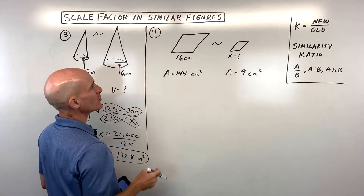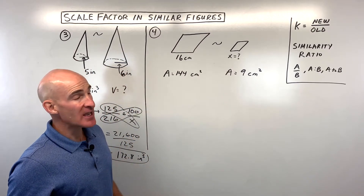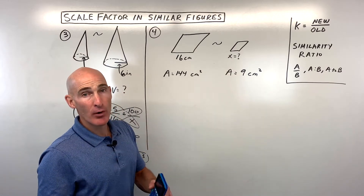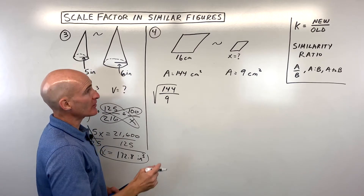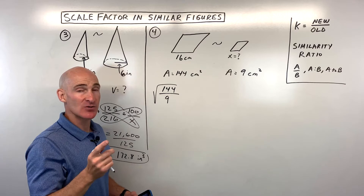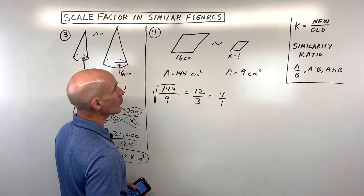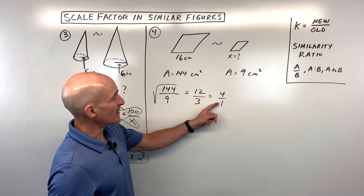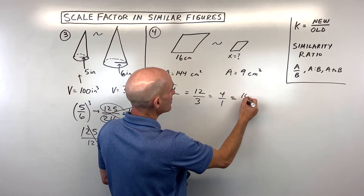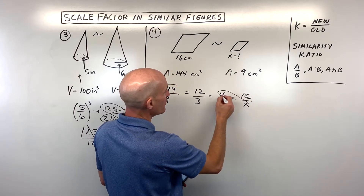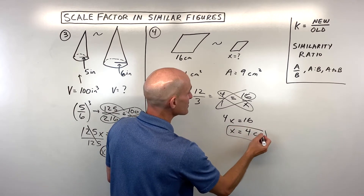For example four, we have two similar figures with a missing side length x, a known side of 16, and we're given the areas. The ratio of the two areas is 144 over 9. Since area is two-dimensional, we take the square root to get the ratio of side lengths: square root of 144 is 12, square root of 9 is 3, which reduces to four to one. Four is bigger than one, so we're comparing large to small: four over one equals 16 over x. Cross multiplying gives 4x = 16, so x = 4 centimeters.